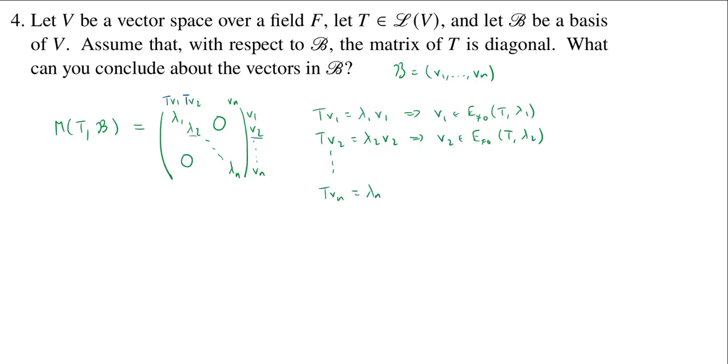T Vn would be lambda n Vn, and so V sub n would be an eigenvector for T corresponding to lambda n.